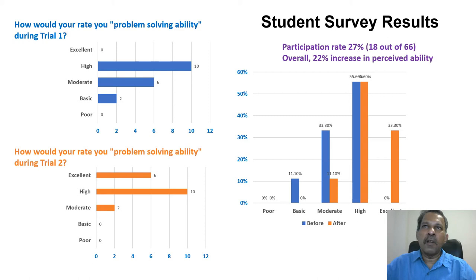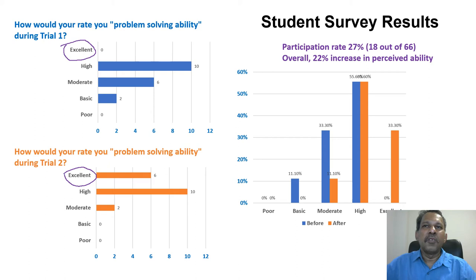To address this, we used triangulation with multiple sources of data. This source comes from the student survey. As you can see in the blue graph, 'excellent' was not ticked by any student after trial 1 — they evaluated their problem-solving rate as low. But after trial 2, there is an increase in the 'excellent' category, and an increased rate after the consultation session. Overall, there was a 22% increase in problem-solving ability based on how students perceived themselves.